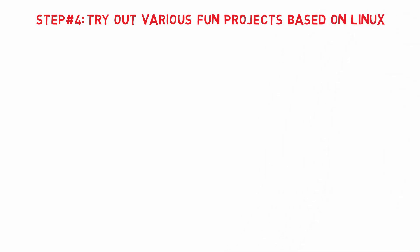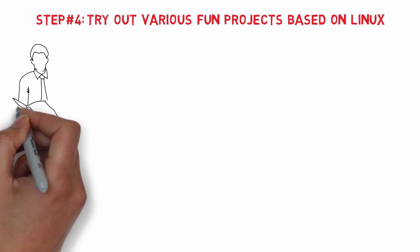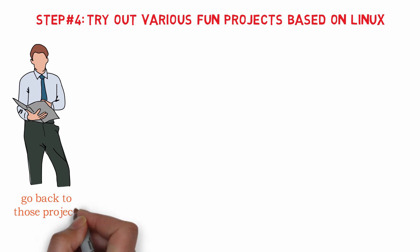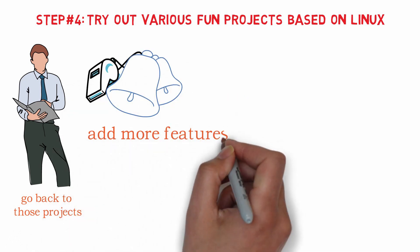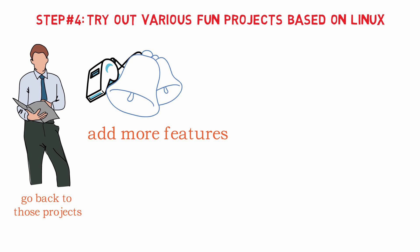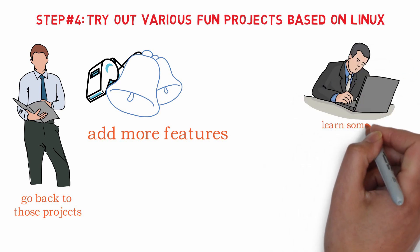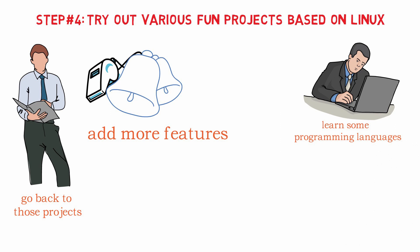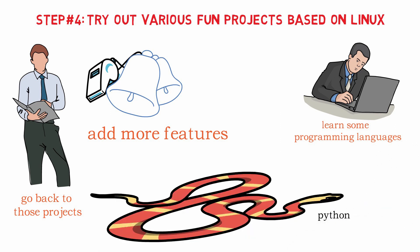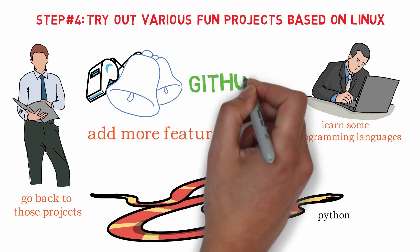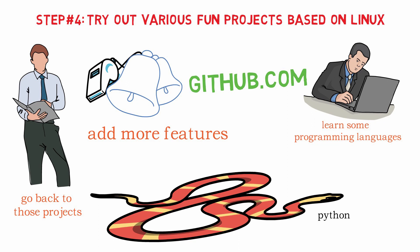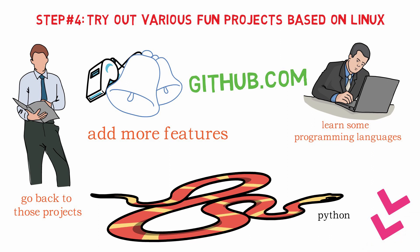Step number four: try out various fun projects based on Linux. In step two you followed some online tutorials to build things — in this step I recommend going back to those same projects and adding more features than what the online tutorial showed you, using the skills you have developed thus far. At this point you may need to learn a programming language to bring your projects to life. I suggest Python, as it is very easy to learn with tons of online resources and fun open source projects available on GitHub. You can find links to books and online courses on Python in the description below.